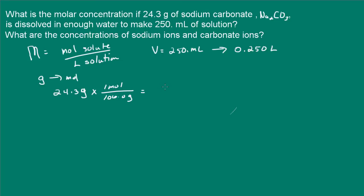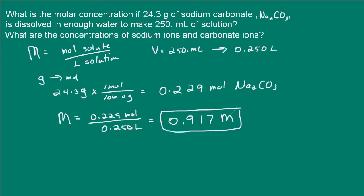And this works out to be 0.229 moles of sodium carbonate. So now we have our moles. Now all we need to do is divide. So we have 0.229 moles divided by 0.25 liters. And that's going to give us 0.917 molar. So our solution is 0.917 molar.